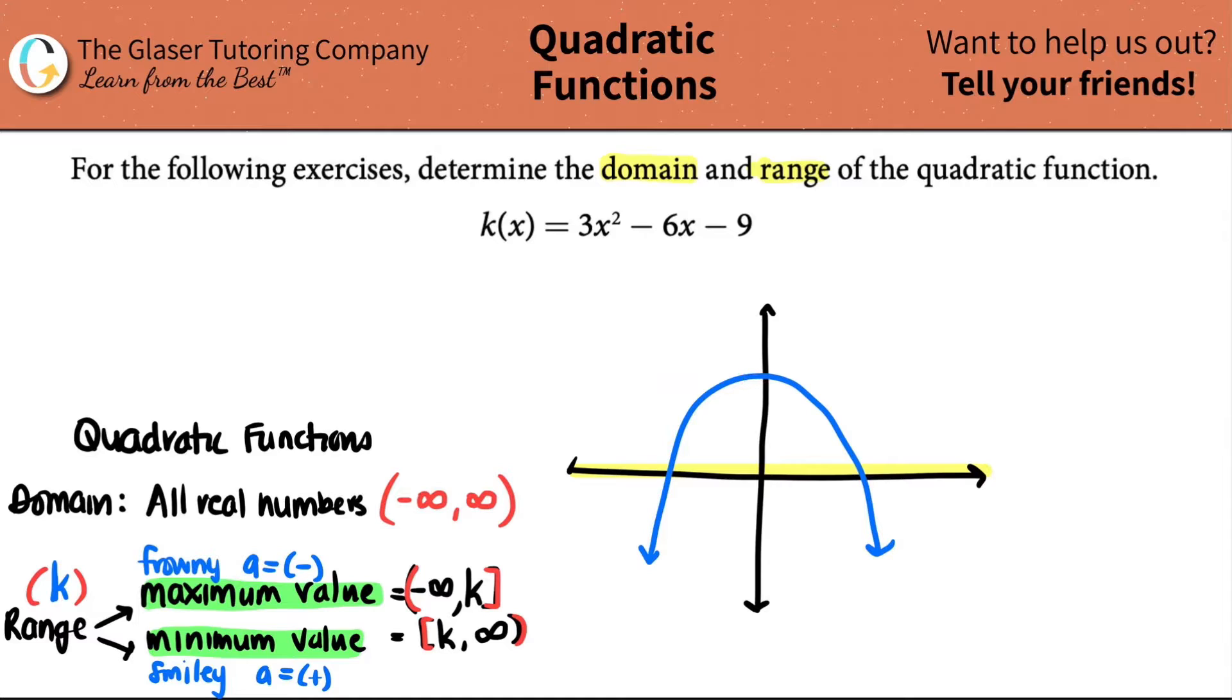If you have a smiley face, so I'll just show you that one real quick. If you had a smiley face quadratic, your vertex is down here, and you have a minimum value in which you can go into the positive infinity direction. So that's where this is all coming from.